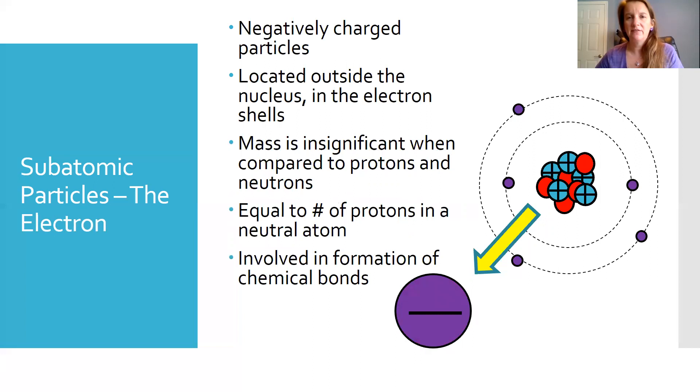The electron is not found in the nucleus. It's found in the electron cloud surrounding the nucleus itself. And its mass is insignificant. It's because its mass is something times 10 to the negative 29. So it is really, really, really small compared to the proton and the neutron. So the mass of the electron does not contribute overall to the mass of the atom that much.